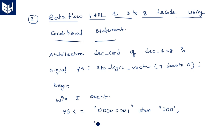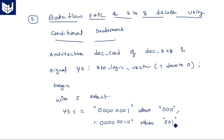When I is `"001"`, Y1 is activated: `"00000010"` when `"001"`. Note: in `with...select` statements you should keep a comma after each condition, not a semicolon — except for the last one, which ends with a semicolon. When I is `"010"`, Y2 is activated: `"00000100"` when `"010"`. When I is `"011"`, Y3 is activated: `"00001000"` when `"011"`.